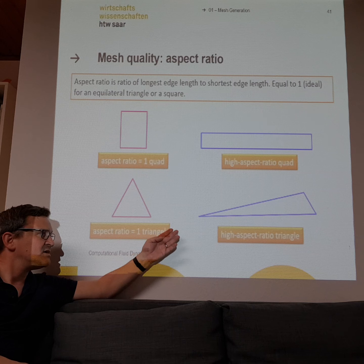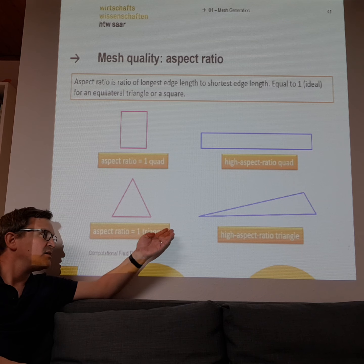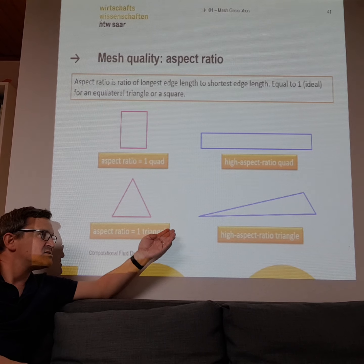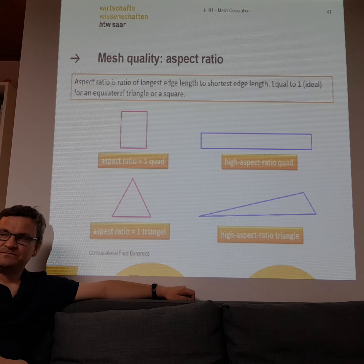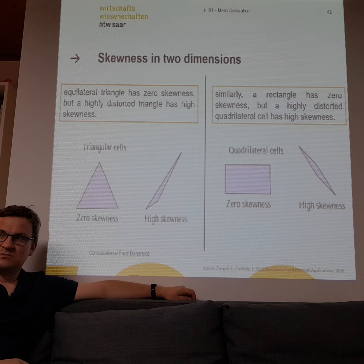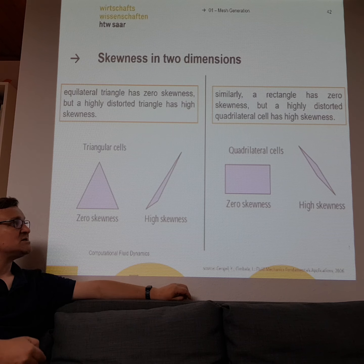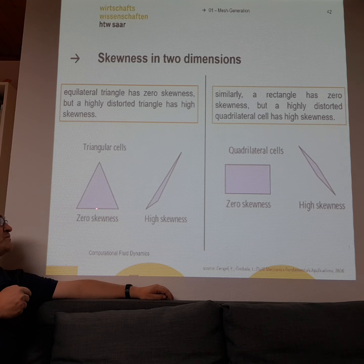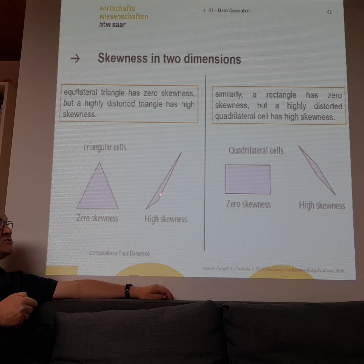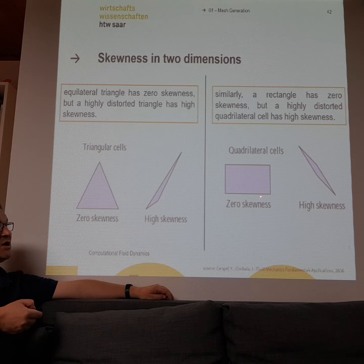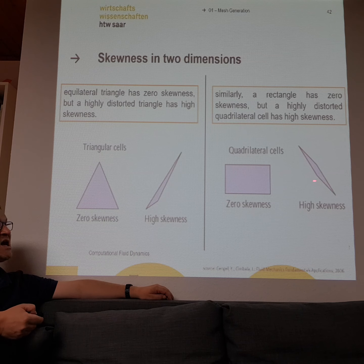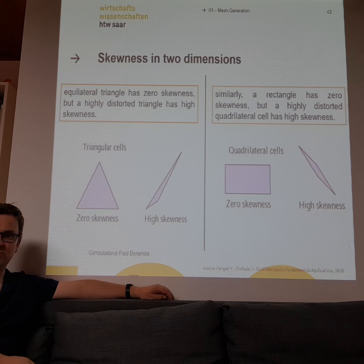Sharp angles with unequal sides means bad quality and the solution can struggle. Here is an example of a good shape, and here is a high-skewness bad shape. No skewness is good; really high skewness is a bad cell geometry.